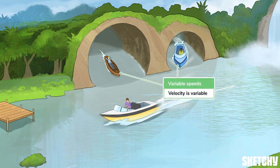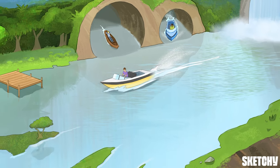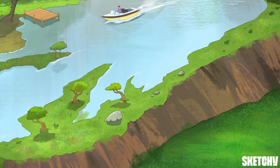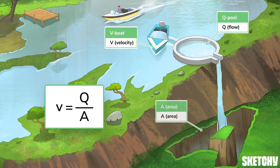To help you connect these two parameters, we have a fast speedboat and a slow canoe, and two tunnels of differing size — narrow and wide. It's no accident that the faster boat speeds through the narrow tunnel, and the slower canoe gently moves through the wide tunnel. This is spelled out by the equation V equals Q over A — blood flow velocity is directly proportional to blood flow and indirectly proportional to cross-sectional area.